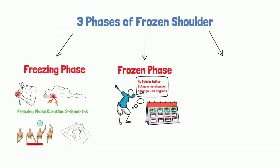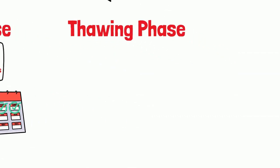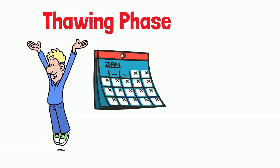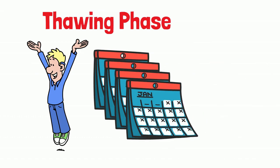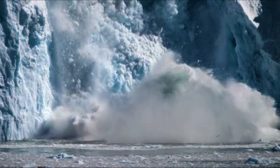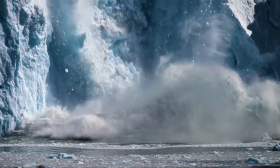Finally, the thawing phase: the gradual return of range of motion that can take from five to twenty-four months to complete. It's like watching a frozen lake melting away, bit by bit, until you can finally move your shoulder freely again.